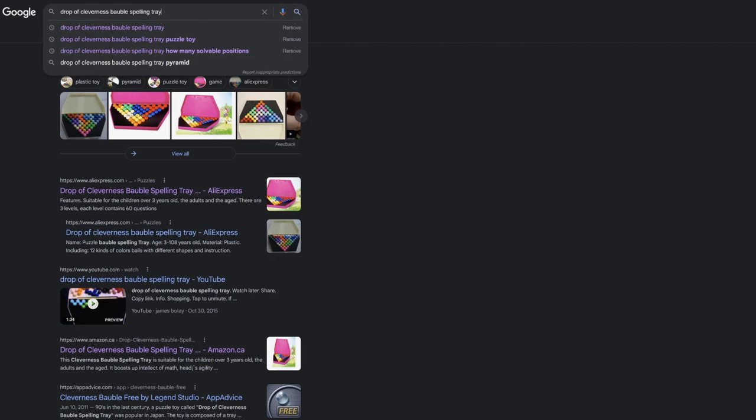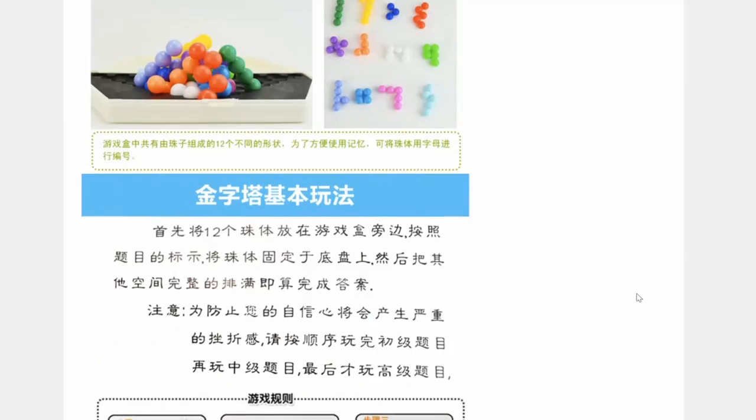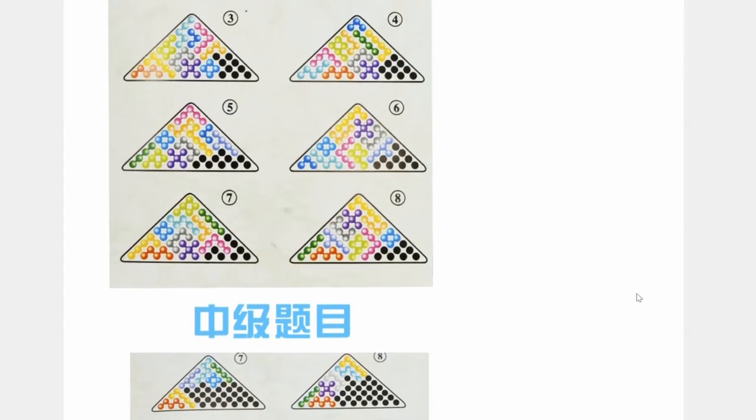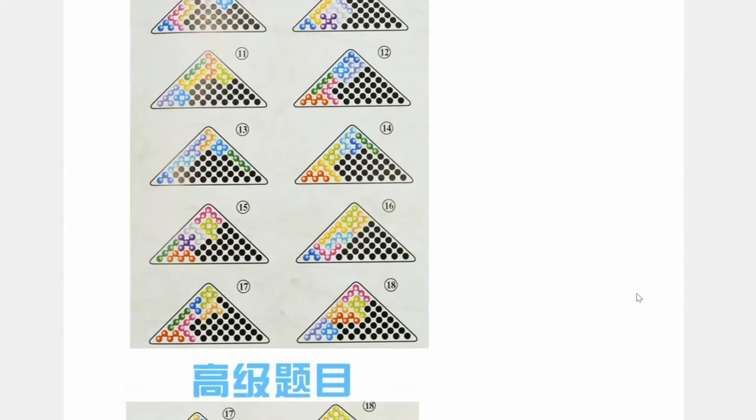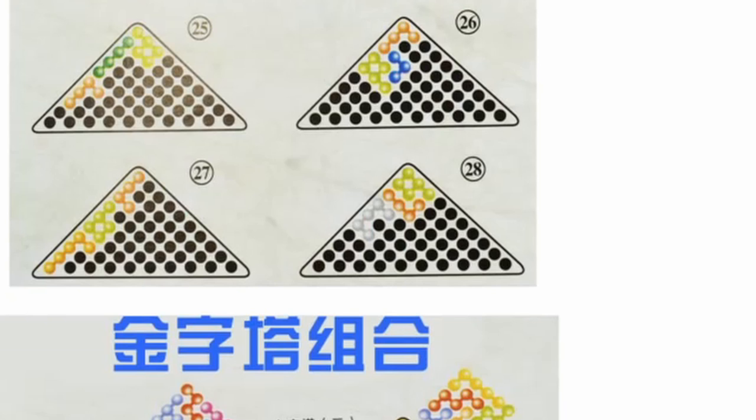So obviously I first went to Google just to see if anyone's already figured it out. All I really found was this user manual. Here we see that there has to be at least 28 solutions since they give 28 unique puzzles for you to start out with. I'm pretty sure it's impossible to calculate the number of solutions mathematically, so we're just going to have to brute force it.